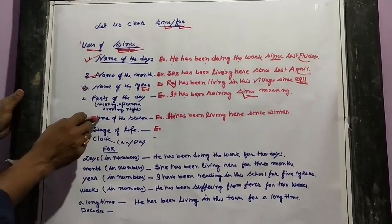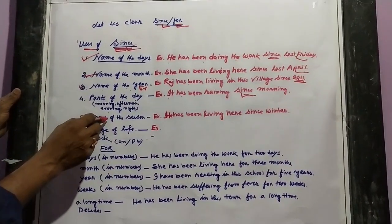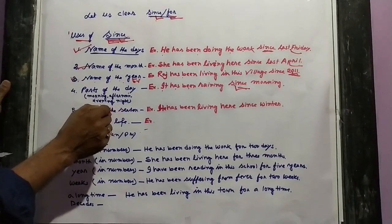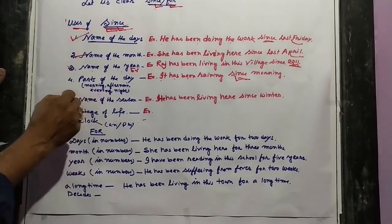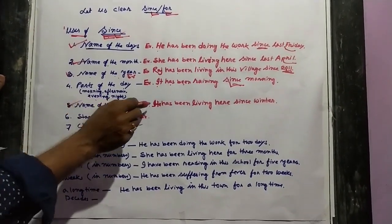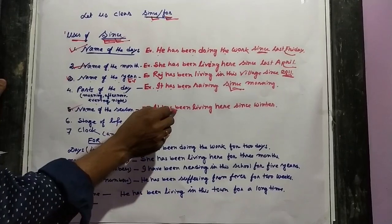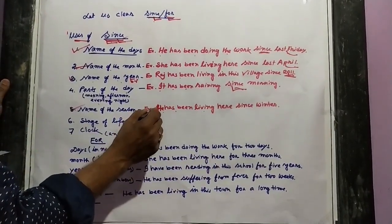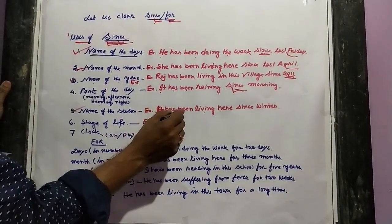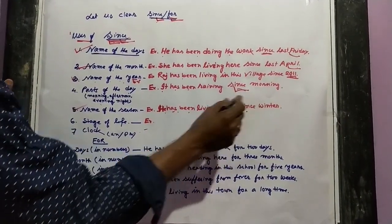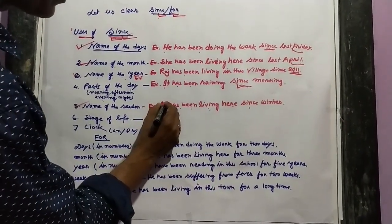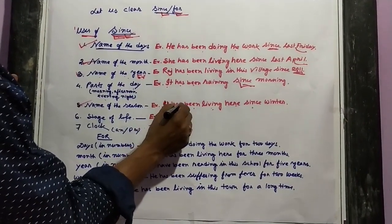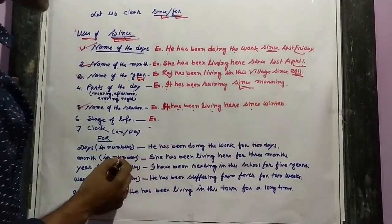Next, if it refers to the name of a season, then you have to use 'since'. Season means 'ritu'. For example: 'He has been living here since winter.' Here 'winter' is the name of a season, so we use 'since'.